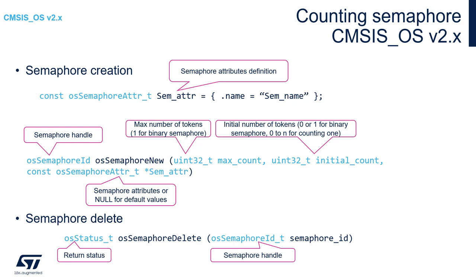This creation function returns the semaphore handler, or zero in case of error — usually related to memory allocation issues. To delete the semaphore, use the osSemaphoreDelete function with the semaphore handler as the only argument. This function returns an osStatus_t type, where zero means successful execution and any negative value means an error.